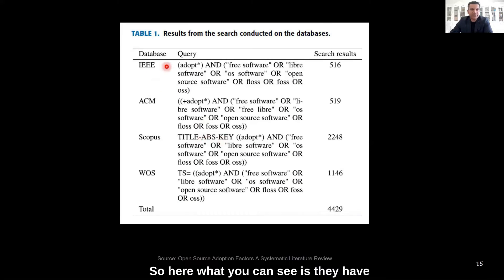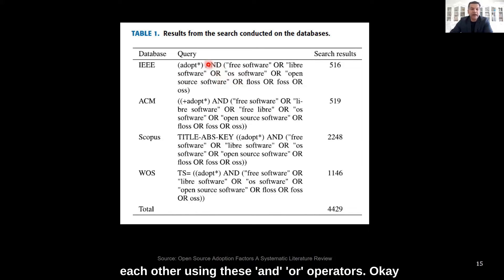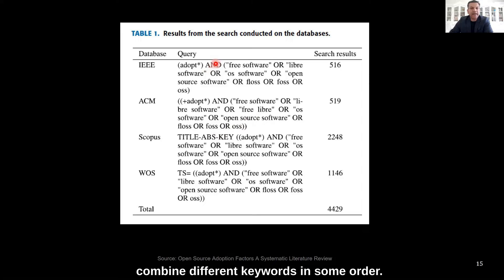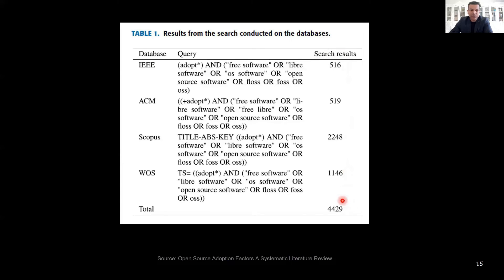Here is another example. You can see the databases they have used and the queries they applied. Keywords are connected with each other using AND and OR operators — these are called boolean operators. They help you combine different keywords in some order. When you run this query on a database you get results.